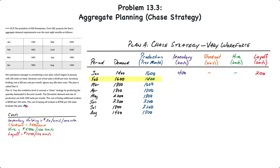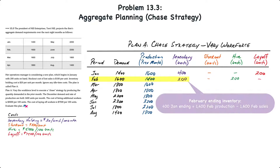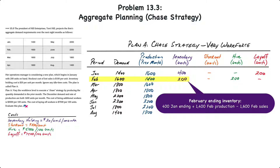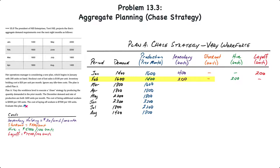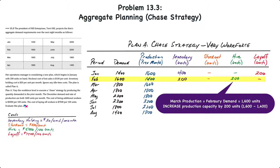In February, demand is 1,600 units and production is 1,400 units (equivalent to January's demand). Ending inventory is the 400 units carried over from January, plus 1,400 units produced, minus 1,600 units sold — giving 200 units in ending inventory. No stockout occurs. Looking ahead, March's production will increase to 1,600 units because that equals February's demand, requiring us to hire two workers. We incur that hiring cost in February so those employees are ready and trained to produce in March.